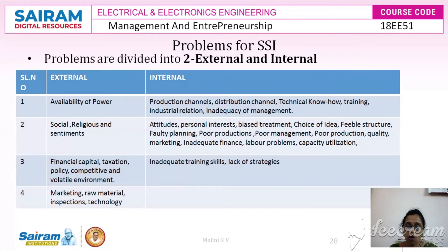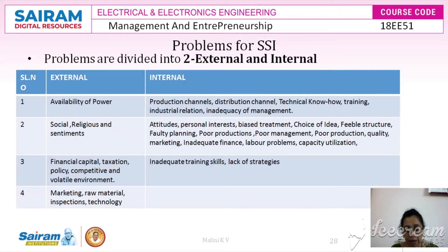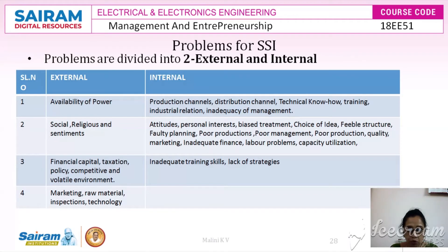The second external problem is social, religious, and sentimental factors. Not all small scale industries can be opened in all areas — for example, leather products cannot be set up everywhere. Capital requirements and financial backup are also external problems, as is the realization time from the market for products sold. Taxation and legal complexities can become a hassle. The competitive and volatile market environment may not always support small scale industries. Additionally, the struggles of existing SSI entrepreneurs can discourage new entrants.